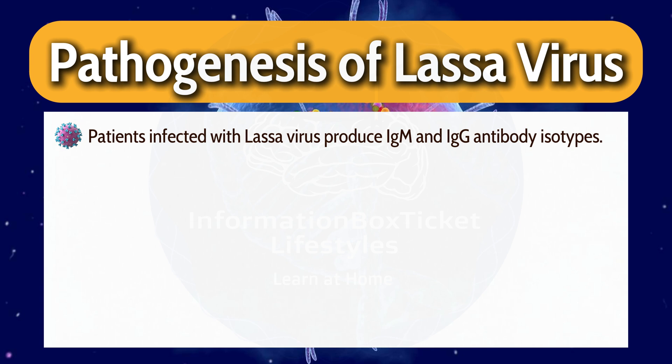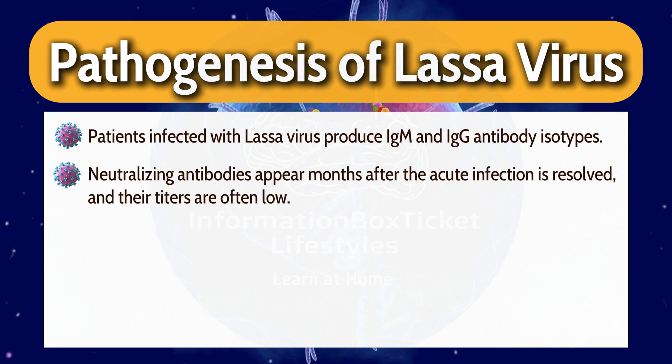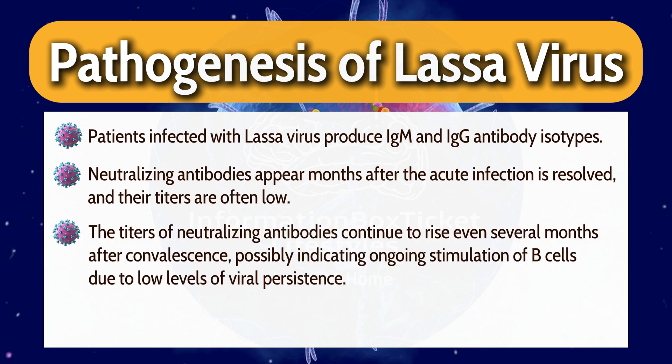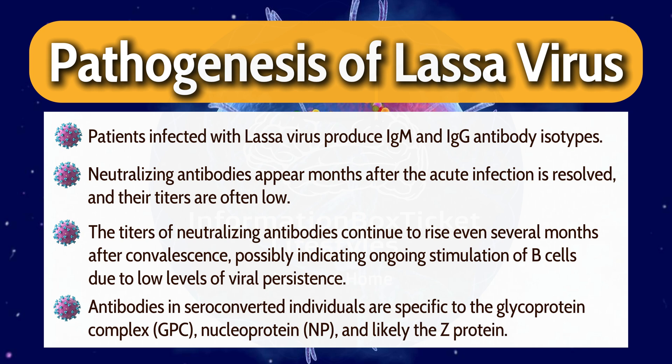Patients infected with Lassa virus produce IgM and IgG antibody isotypes. Neutralizing antibodies appear months after the acute infection is resolved, and their titers are often low. The titers of neutralizing antibodies continue to rise even several months after convalescence, possibly indicating ongoing stimulation of B cells due to low levels of viral persistence. Antibodies in seroconverted individuals are specific to the glycoprotein complex, nucleoprotein (NP), and likely the Z-protein.